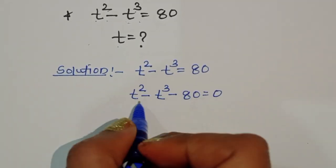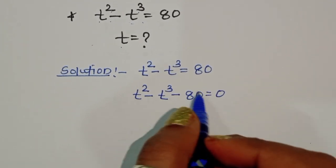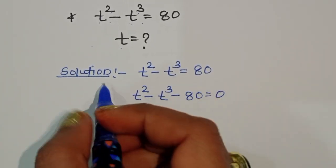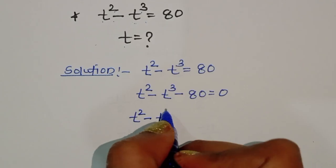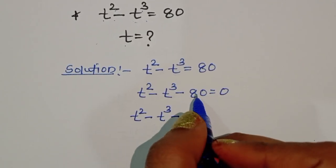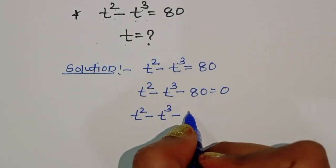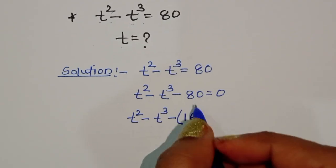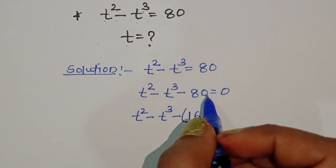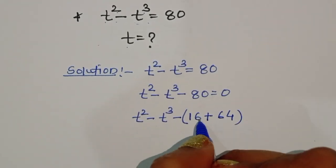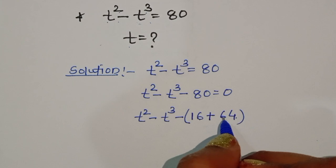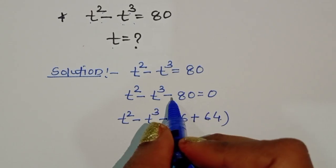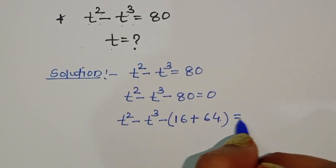Now t squared minus t cubed minus 80. We have to convert 80 into two numbers — one in square form and one in cube form — with the same number. So we write it as t squared minus t cubed minus 16 plus 64. Since 4 squared is 16 and 4 cubed is 64, and 16 plus 64 gives us minus 80. So minus 16 minus 64 equals minus 80, equal to 0.